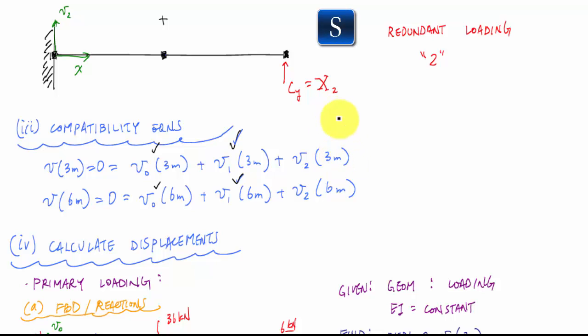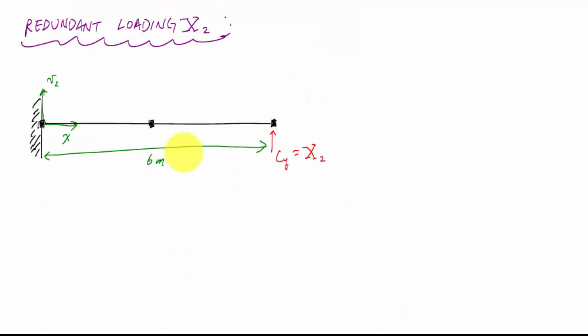So now I want to calculate the displacements associated with my redundant loading x2. I want the displacement at 3 meters and 6 meters of this drawing right here. So I will take this. Here is my drawing for redundant loading x2. It's just the 6 meter long cantilever beam with x2 applied at the end.